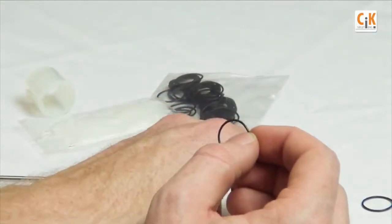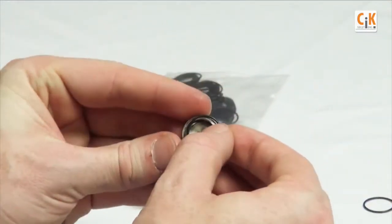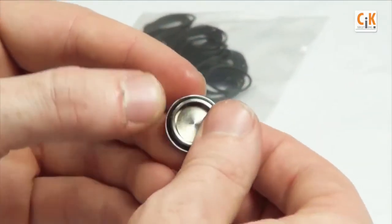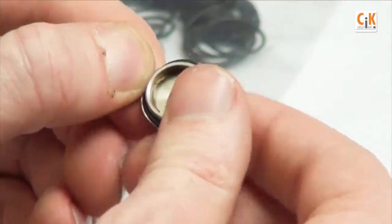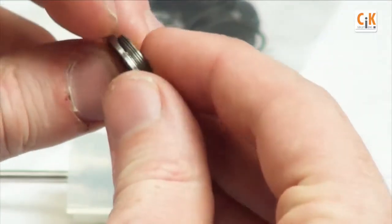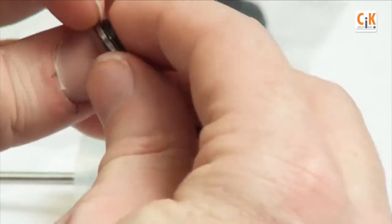Then place the o-ring in the groove of the battery cap. You can use your fingernails to make sure it's fully seated.